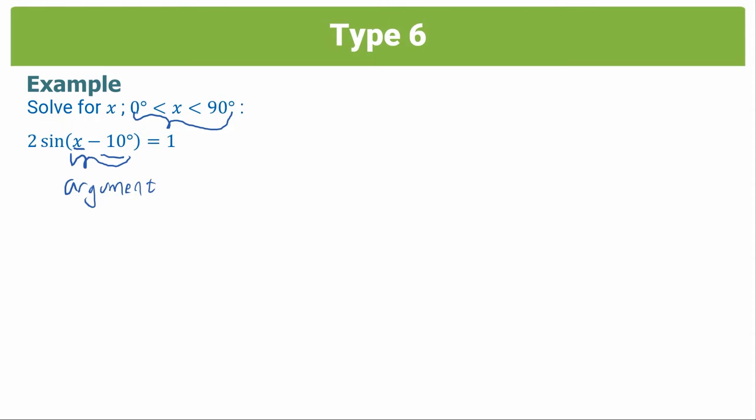So step one, get in the form trig function equals number. So I'm going to divide the entire equation by two. Take that two over to the right hand side, and that becomes sin(x - 10°) = 1/2.